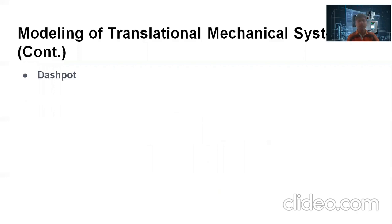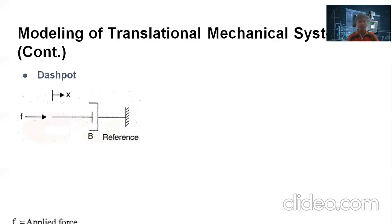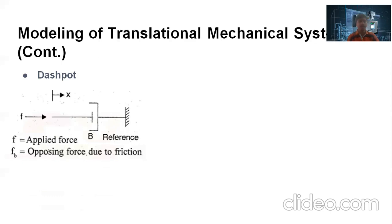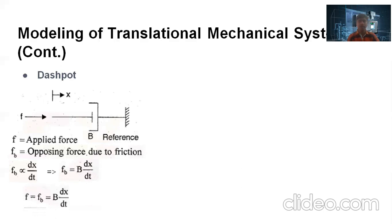The second basic component of the translational system is the dashpot. This is the physical model of the dashpot where one end is fixed. The dashpot causes viscous friction between the solid body and the fluid medium. Due to the viscous friction, when the force is applied, there is a displacement and an opposing force due to the friction. This opposing force is directly proportional to the velocity dx/dt. Therefore, Fb = B · dx/dt, where B is the viscous coefficient, and by the net force balance equation, F = Fb = B · dx/dt.